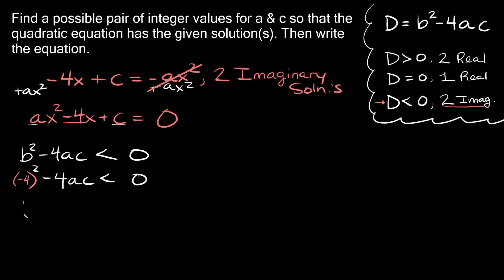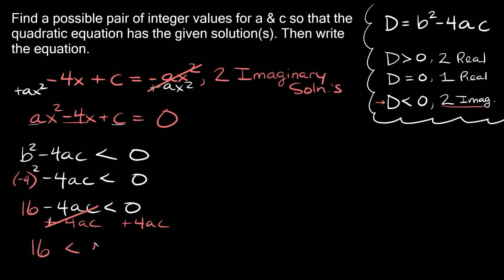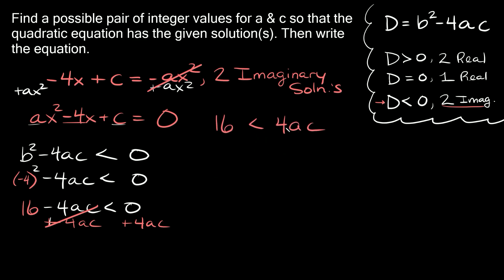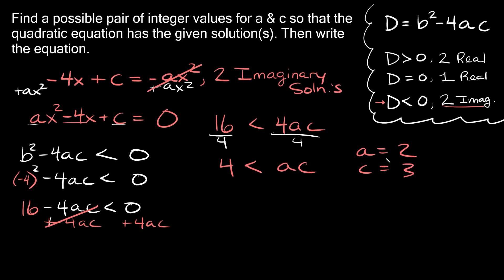Negative 4 squared is 16, so we get 16 minus 4ac is less than zero. Adding 4ac to both sides gives 16 is less than 4ac. Dividing both sides by 4, we get 4 is less than ac. So we need a and c to have a product greater than 4. We can say a equals 2 and c equals 3, because 2 times 3 is 6, and 6 is greater than 4.